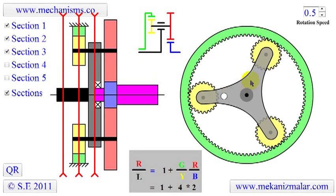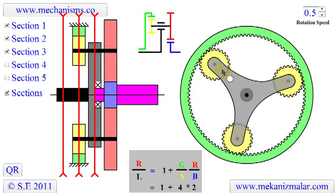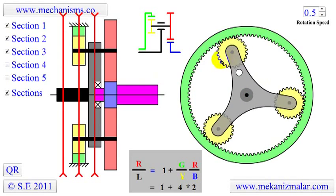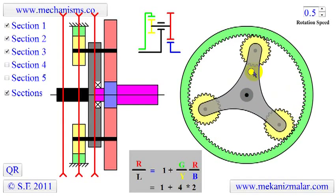The third section shows the carrier arm on which the yellow and red planets are attached. Notice that the input shaft is directly connected to the carrier.